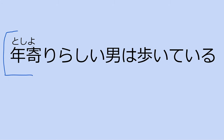年寄りらしい男は歩いている. Perfect. What does this mean? A seemingly elderly man walking. Exactly, perfect. And while you were doing that, I was Googling yori.